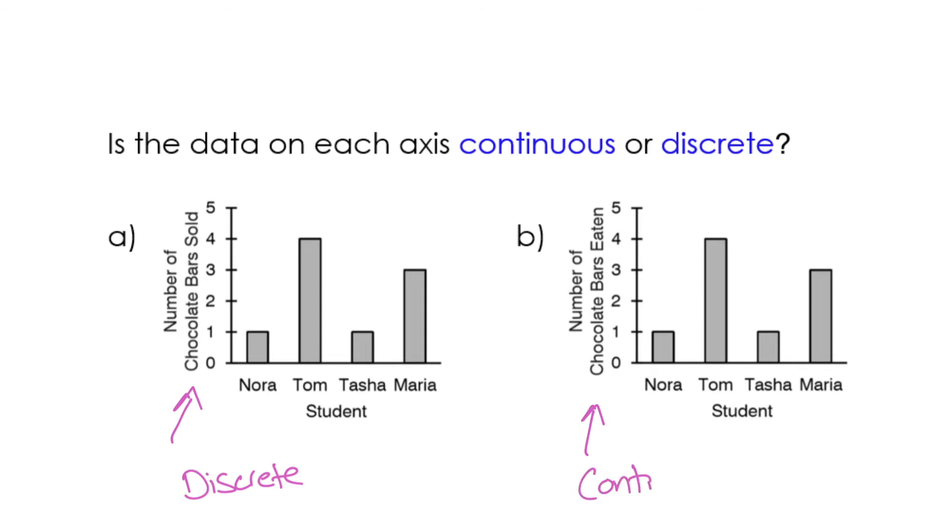This would be continuous because we don't know once the chocolate bars leave the store what happens to them. You don't know if someone eats a full one or half of one or a quarter of one. So this is continuous. We don't know exactly what the data is. I know this bar graph shows something here, but we don't really know.